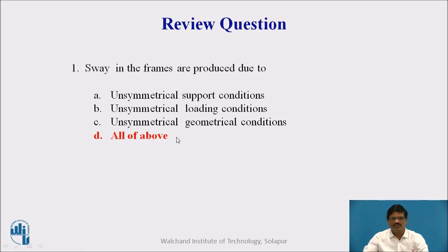Because due to unsymmetry of all these—either support conditions, loading conditions, or geometrical conditions—any one kind of unsymmetry will lead to sway in the frame. Therefore D is the correct answer.